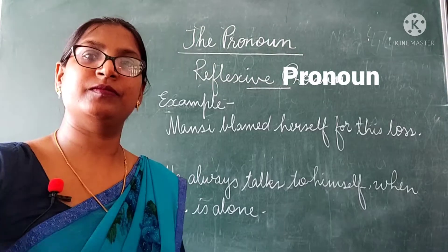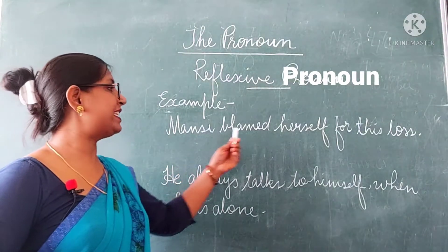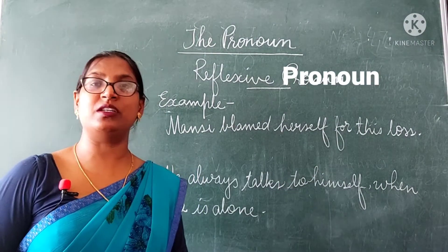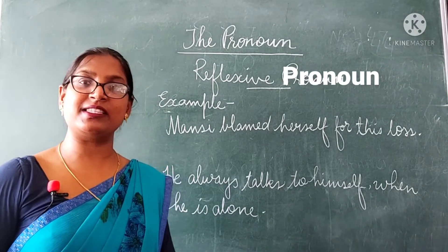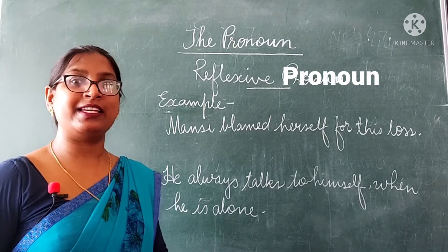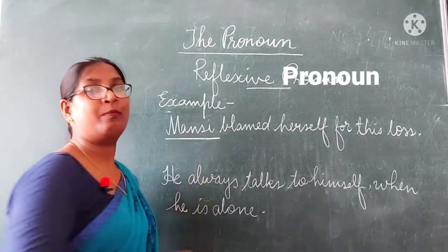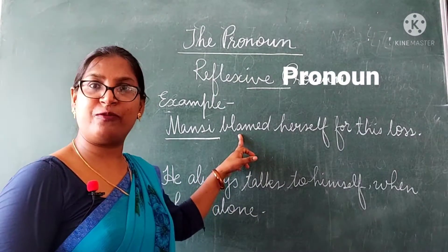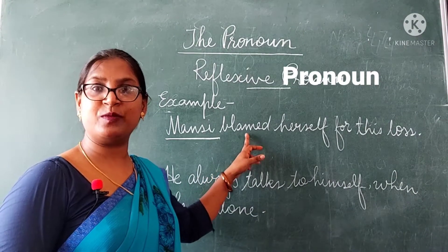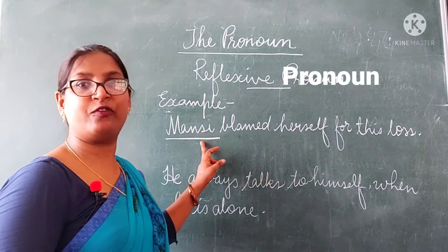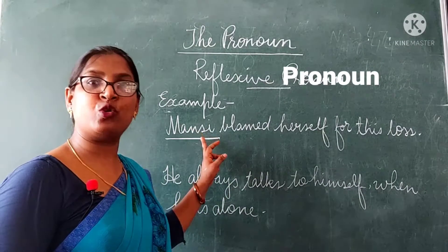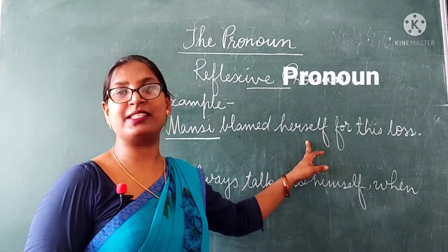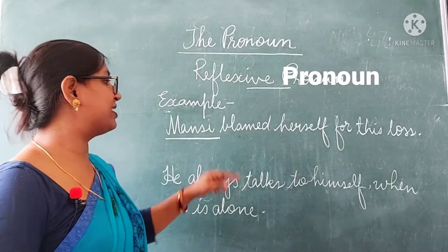For example: "Mansi blamed herself for this loss." Can you recognize the subject in this sentence? Yes, Mansi is the subject. Mansi is the doer of the action. The action is the action of blaming — "blamed" is the verb, so the action of blaming is performed by Mansi. Mansi is the doer of the action, and the object is "herself."